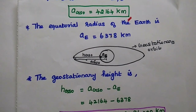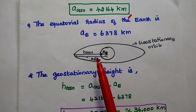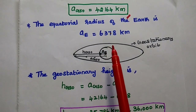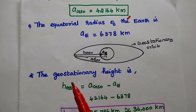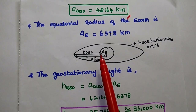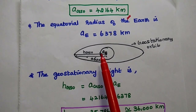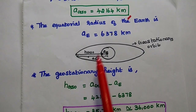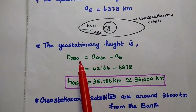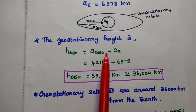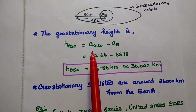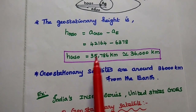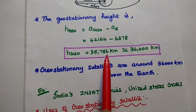Next we find the height of the geostationary orbit. We consider the equatorial radius of the earth, which is 6,378 kilometers. To get the height of the geostationary orbit, we subtract the equatorial radius of the earth from the radius of the geostationary orbit. So the geostationary height equals 42,164 minus 6,378.